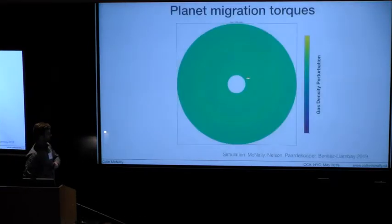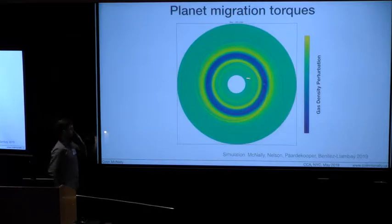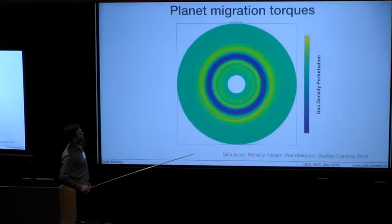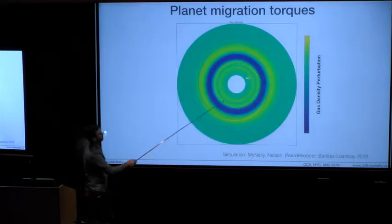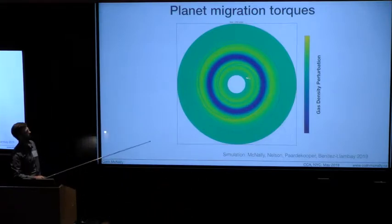So what happens when you drop a planet into a disk? It's a bit of review for anybody who maybe hasn't run into this before. I've dropped a planet in here to a disk, it's migrating in, it's causing a response to the gas surface density, and that in return is causing a torque on the planet.